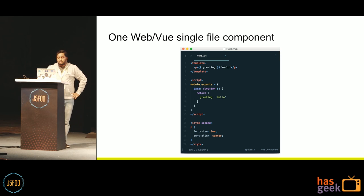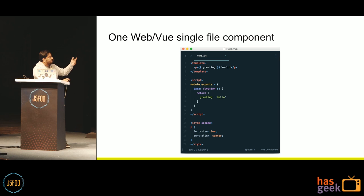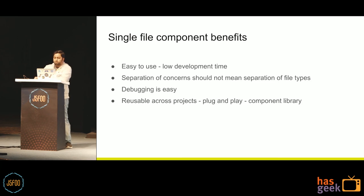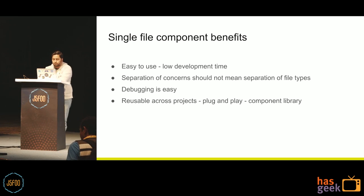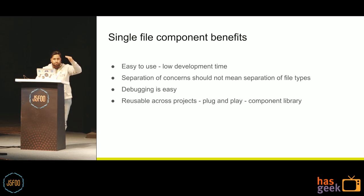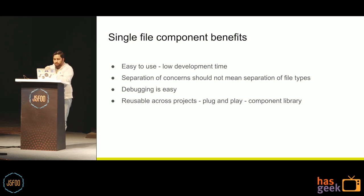Single file component is a development style where you write the template — your HTML — your script, and your style all in a single file. This has a lot of benefits. It is easy to use because everything you need is in one file; you don't have to switch between tabs or wait for complex CSS to render. Polymer and Vue suggest that separation of concerns need not mean separation of file types. You can pack all the CSS, JavaScript, and templates in a single file and still have separation of concern with respect to business components. Having a compact single functional unit makes debugging easy, and you can pick and drop it into another project.